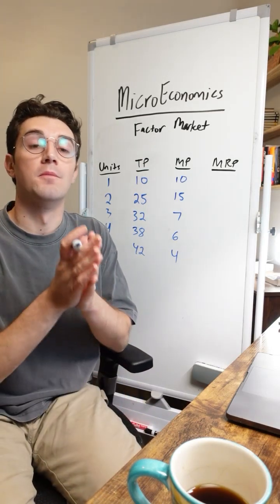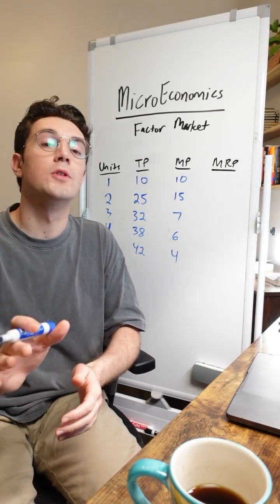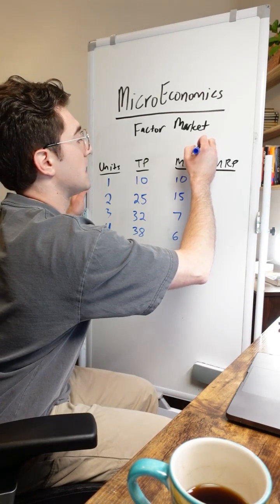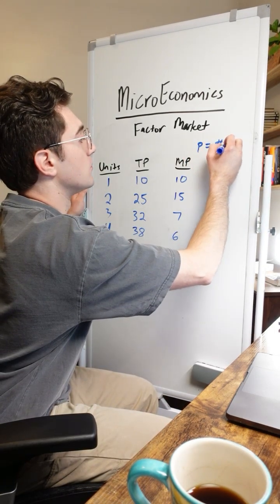All right, that's marginal product. Marginal revenue product, all you're going to do is multiply marginal product by the price. So I'm going to say that each unit is going to be sold for 10 bucks.